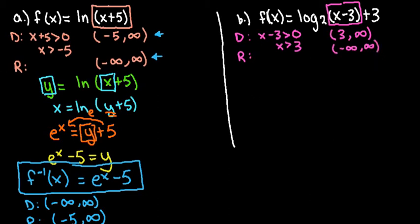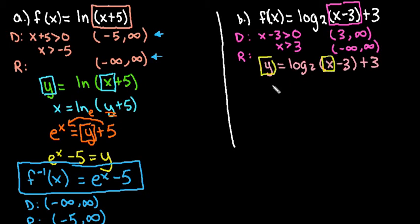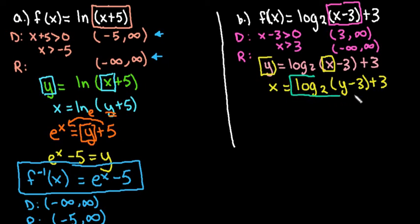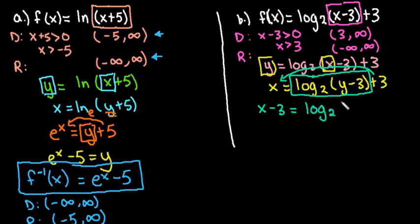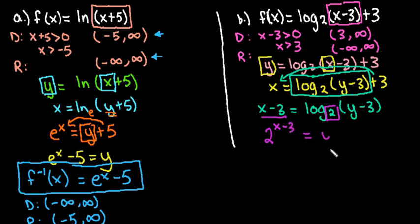To find the inverse, we start by writing y equals log base 2 of (x minus 3) plus 3. We switch x and y, giving us: x equals log base 2 of (y minus 3) plus 3. This time we have a term outside the logarithm, so we must isolate the log first. We move the positive 3 to the other side, making it negative 3. Our goal is to get y completely by itself, so we simplify the group it's part of. Rewriting in exponential form: base 2, exponent x minus 3, equals y minus 3.